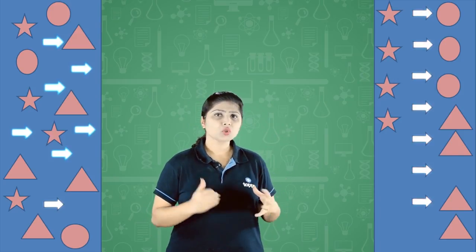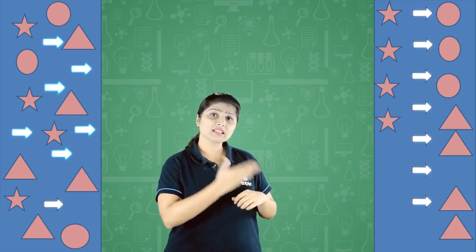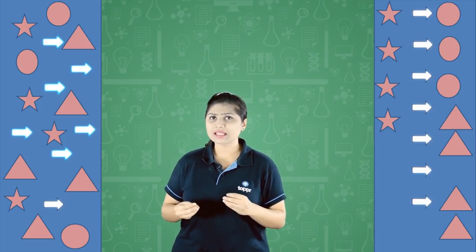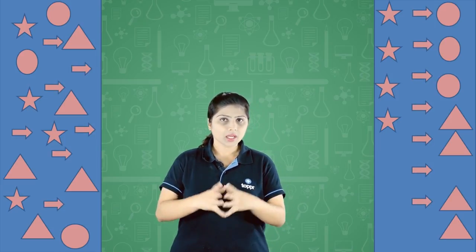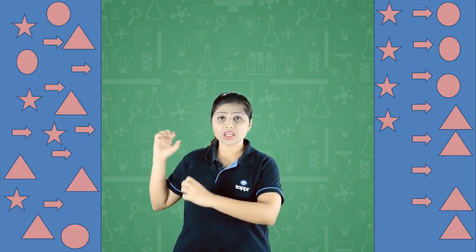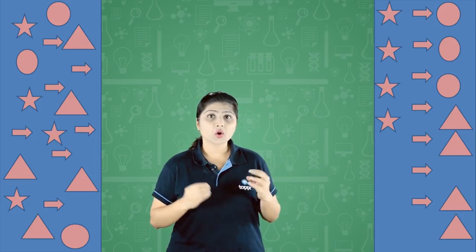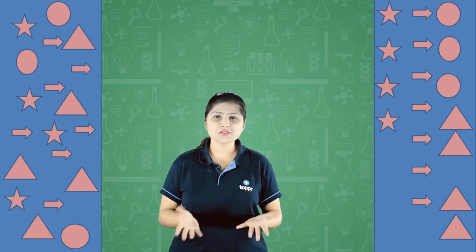It was easy for me to count how many stars or arrows are there in this picture, but it was not that easy to count them here, because there is chaos here. But here, things are classified according to their shapes, so it is easy to know which is an arrow, which is a star, which is a circle, and so on.